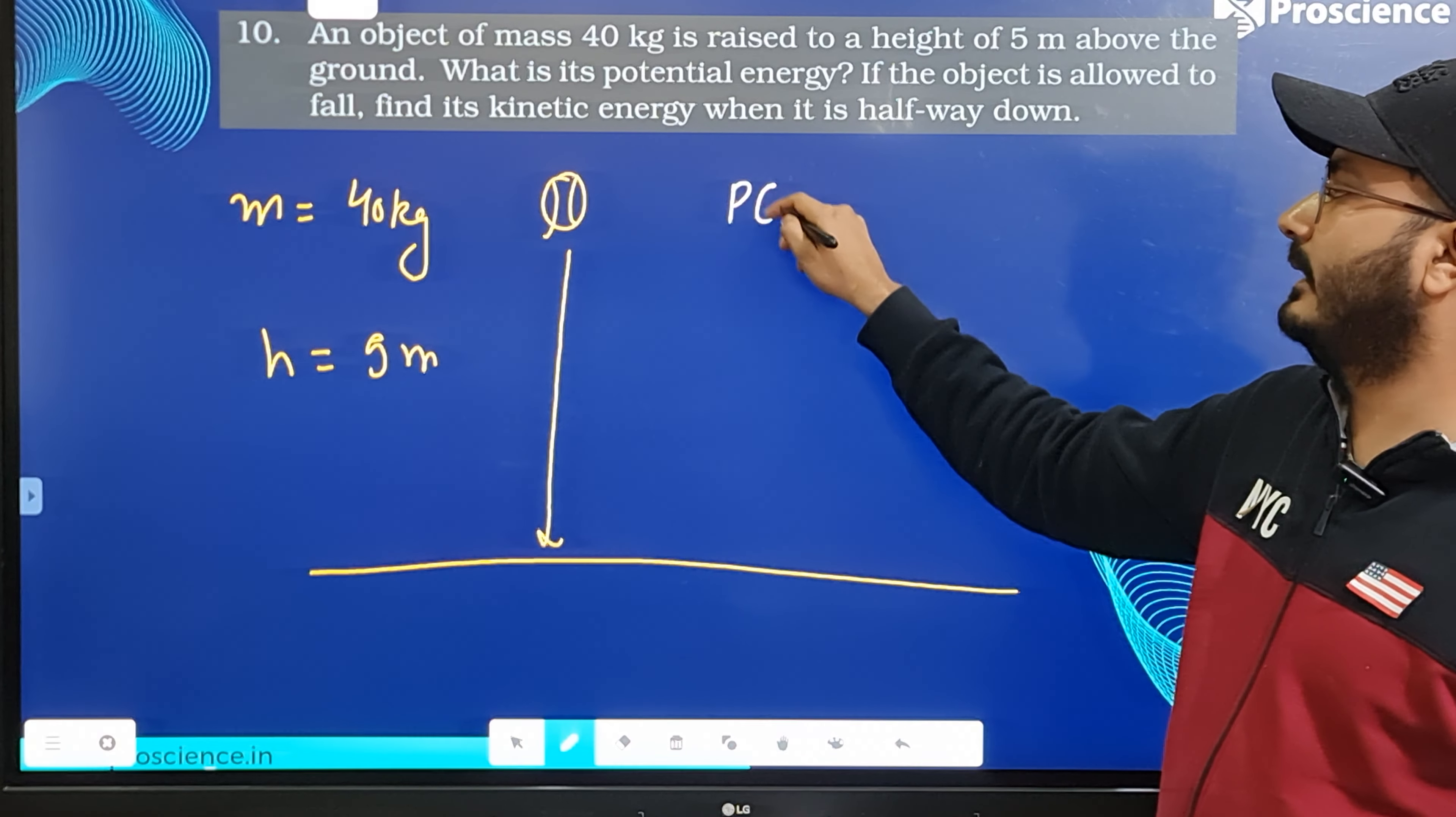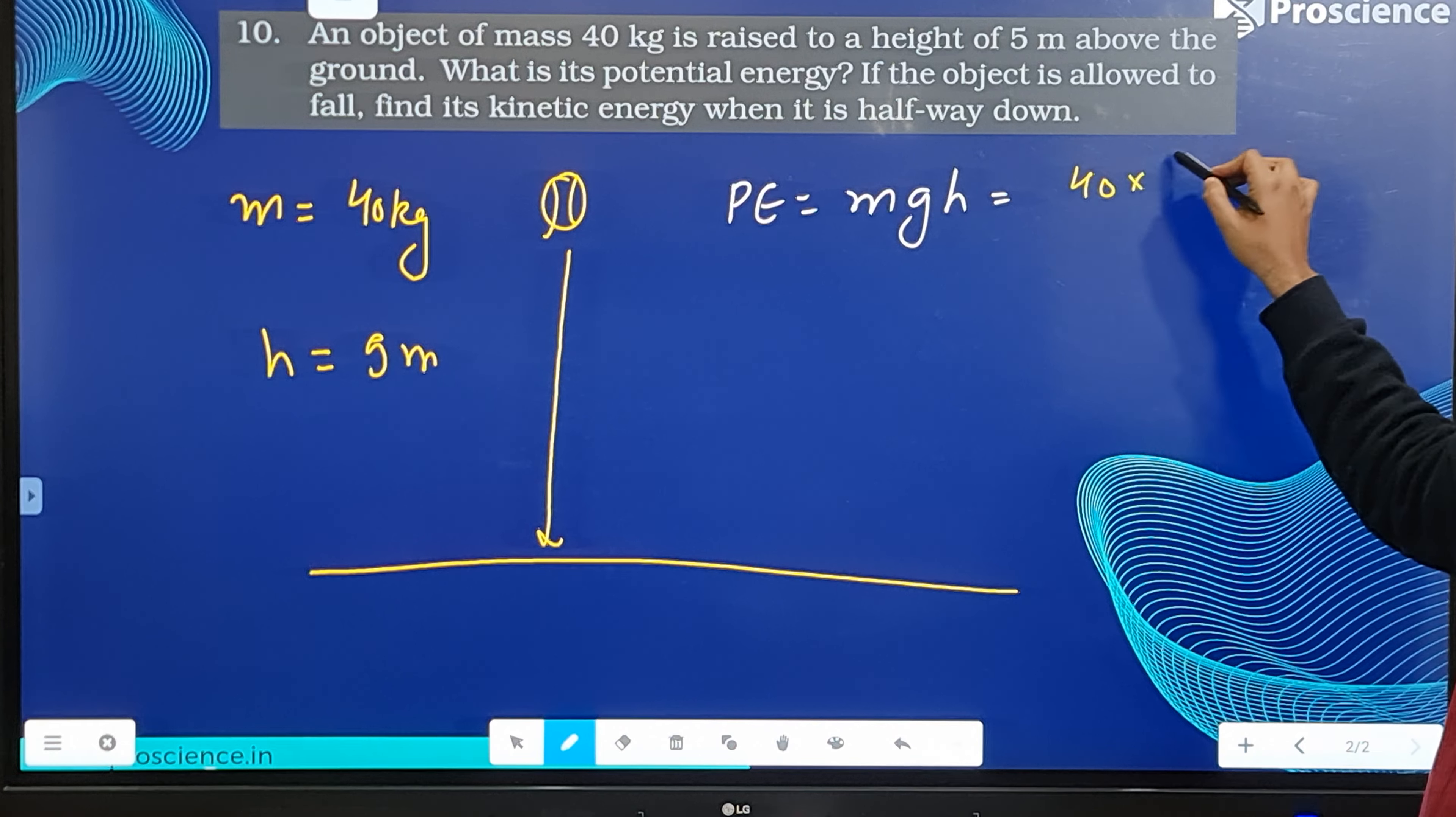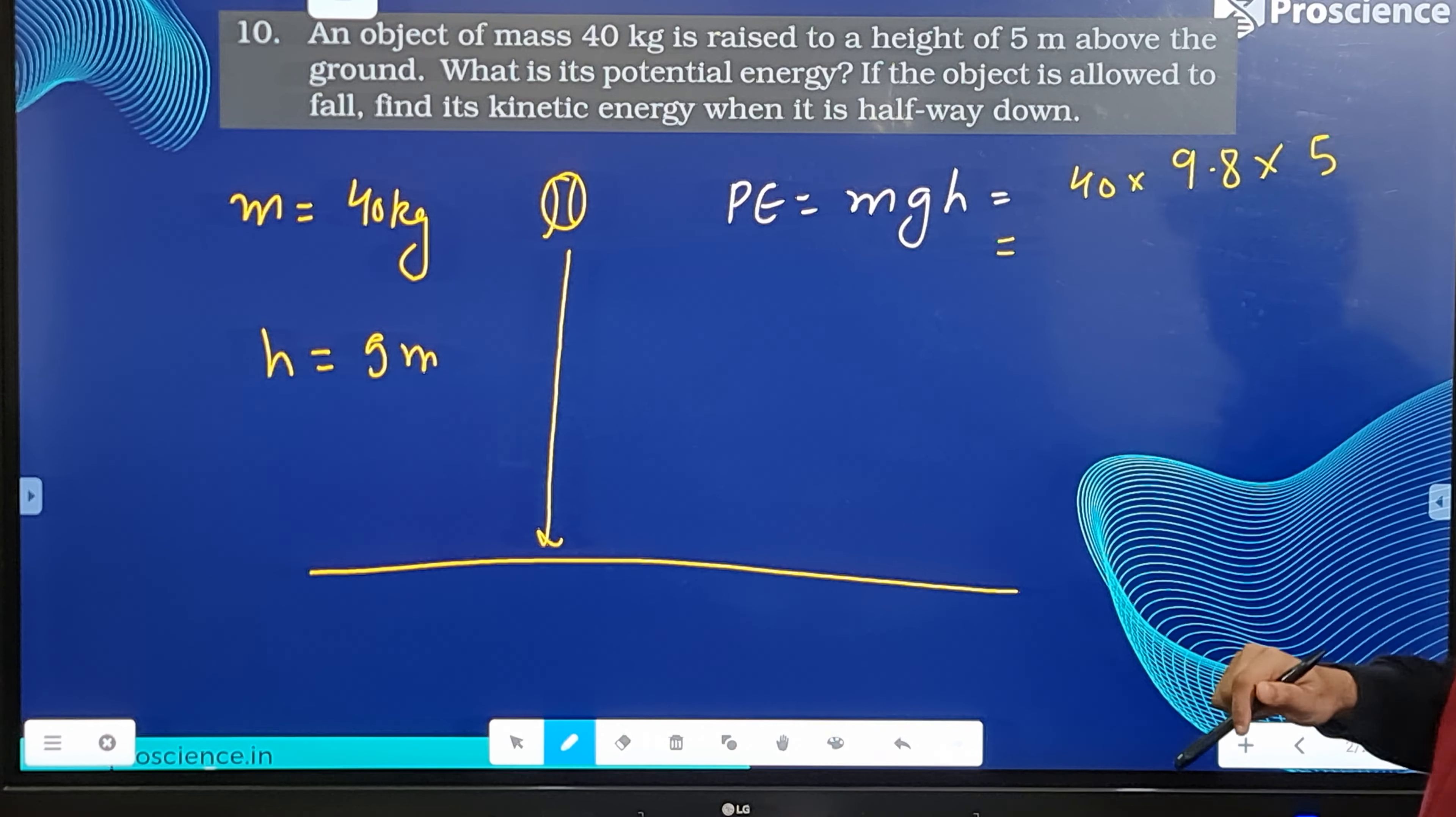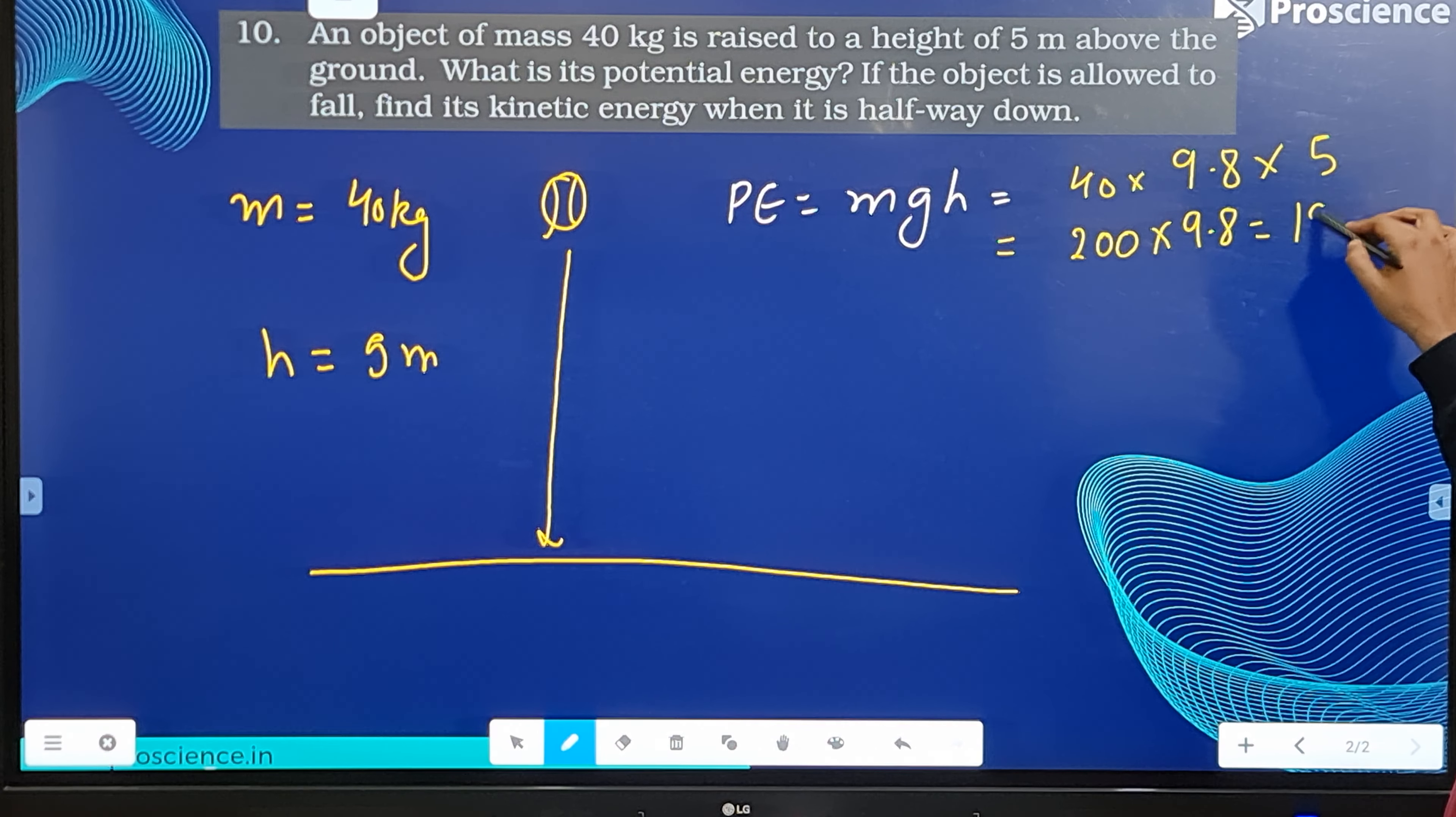Potential energy formula is mgh, so 40 into acceleration 9.8 into height 5. That gives us 200 into 9.8, and the potential energy comes out to be 1960 Joules.